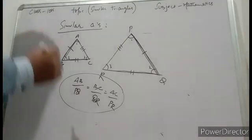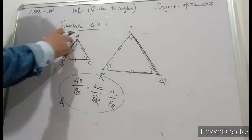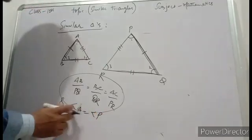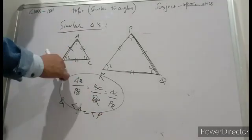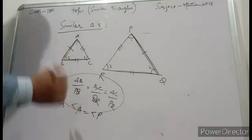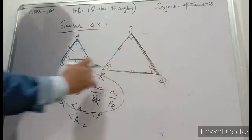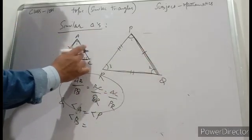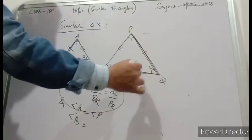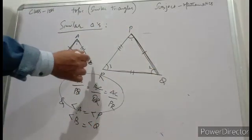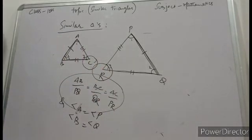And angles must be equal. Angle A corresponds to angle P, angle B corresponds to angle Q in triangle PQR. Angle C corresponds to angle R in triangle PQR. Triangle ABC and PQR: angle A equals angle P, angle B equals angle Q, angle C equals angle R.